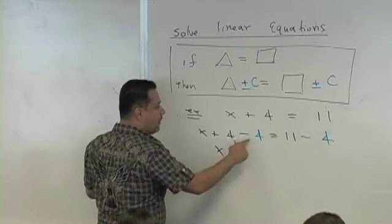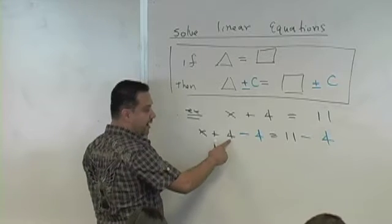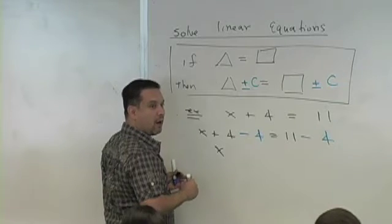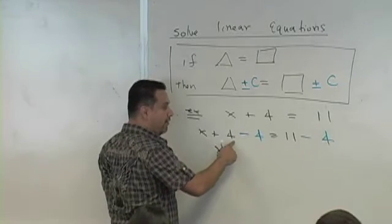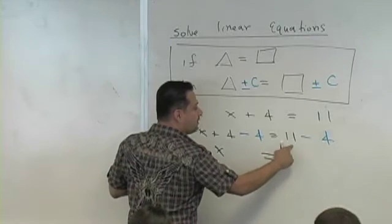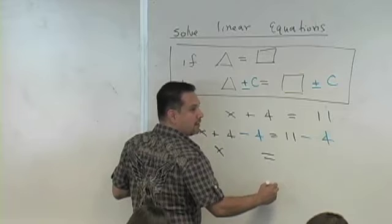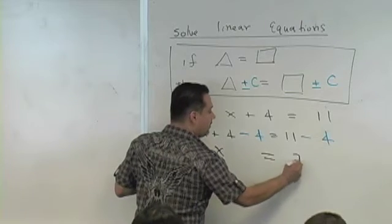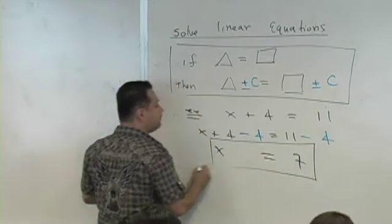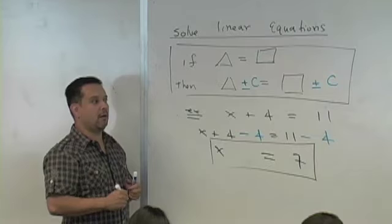If you have four dollars and you owe four dollars, your money's gone. So the 4 on the left side is gone. X will equal, what's 11 minus 4? 7. You guys have solved this equation for x. X is by itself.